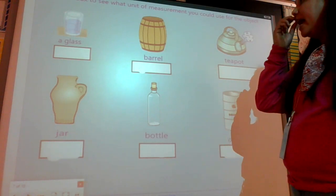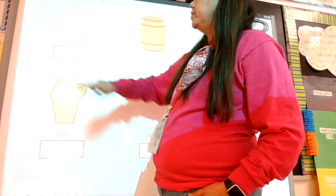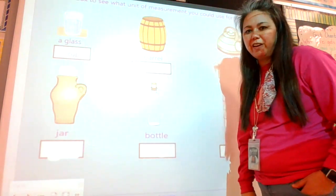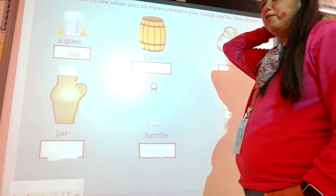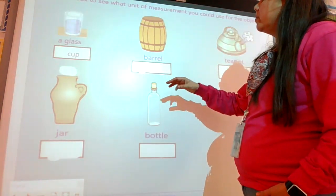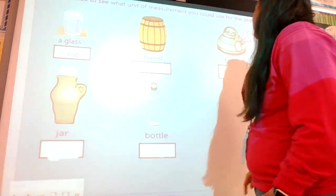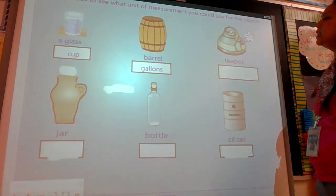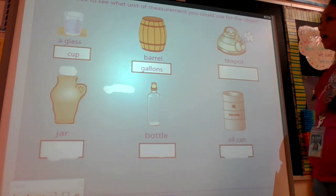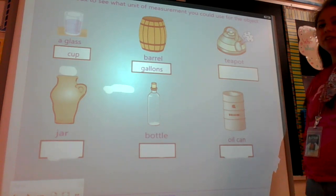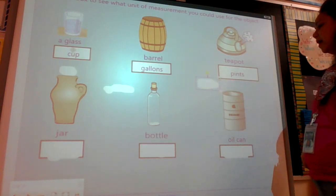Welcome back. A glass, hopefully you notice that's a small amount, so we would think maybe a cup. If you said cup, you got that right. A barrel is really big. Think about if you ever went to a rodeo, those big barrels of water. I would say that's a huge, large amount, so maybe gallons. A teapot could probably be a quart or a pint, depending on the size of the teapot. This one doesn't look that big. I would say either one, and I definitely go down like they did in pints.